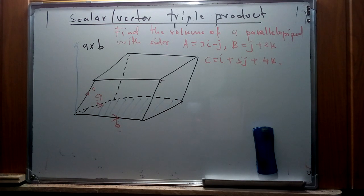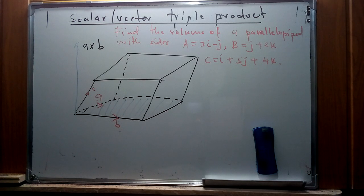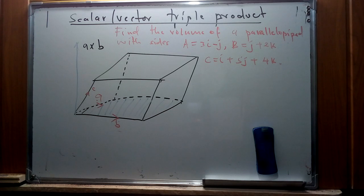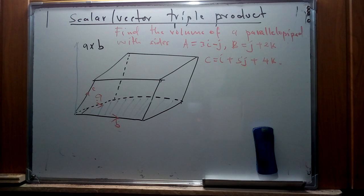I'll use the specific vectors a and b to represent the base of this three-dimensional figure. A parallelepiped is formed by a combination of six parallelograms — parallelograms are two-dimensional figures where opposite edges are parallel. So this illustration will be used to find the volume of our parallelepiped with sides: a = i − 3i − j, b = j + 2k, and c = i + 5j + k.